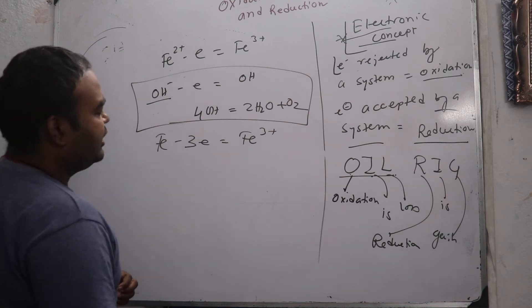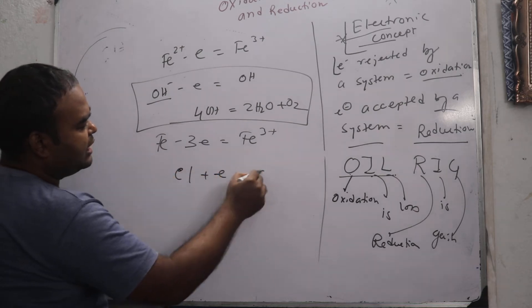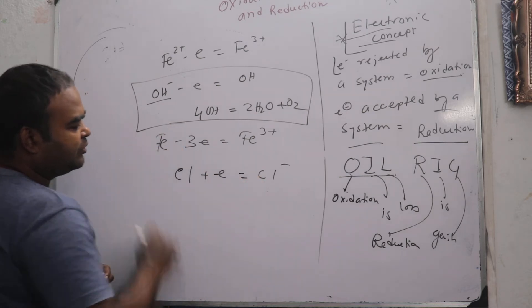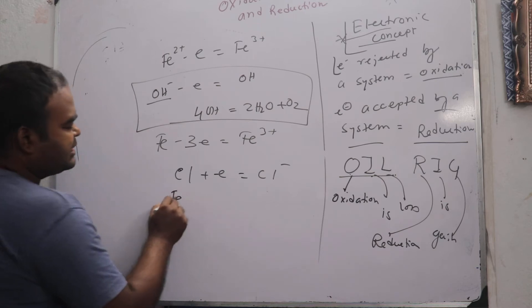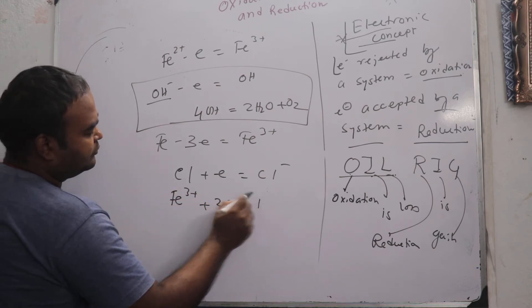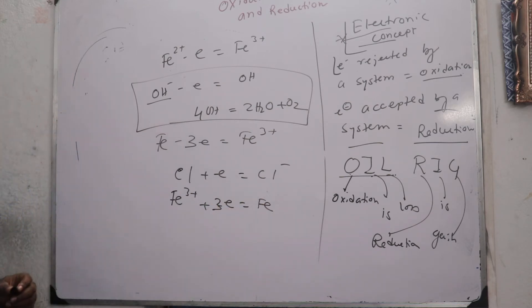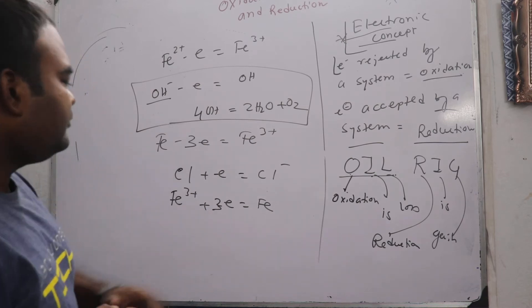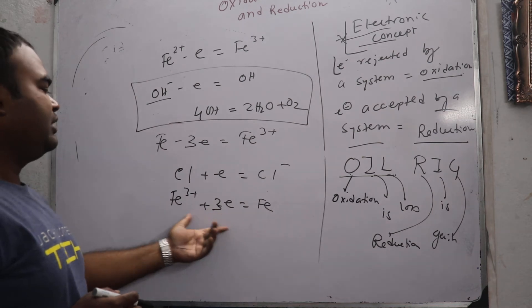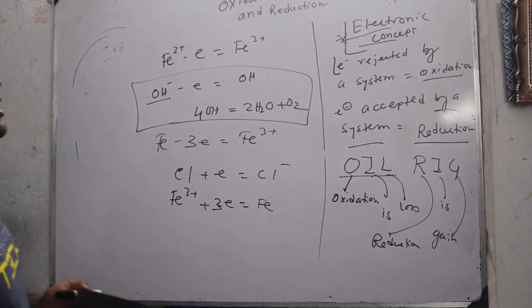Similarly, take reactions for reduction. The conversion of Cl to Cl minus is a reduction reaction because in this process chlorine is accepting an electron. Any cationic species may also take an electron to convert itself to a neutral one, and in this process it is taking up an electron, so it is a reduction reaction.